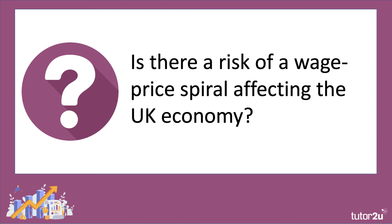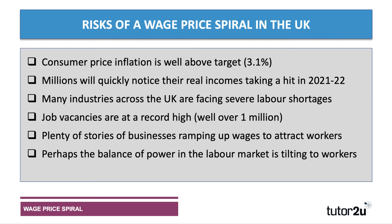Thinking in the current context, what is the risk of a wage price spiral affecting the UK economy? Several factors point to a wage price spiral potentially emerging in the next year or so. First, inflation in the UK is now well above target, currently 3.1%, while the Bank of England's inflation target is just 2%. There's no doubt that millions of people will quite quickly notice that their real incomes are taking a hit in 2021–22. Once inflation gets up to 3%, 4%, perhaps 5% or more, people do tend to notice price changes — in their energy bills, the grocery bill at the end of the week.